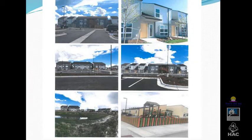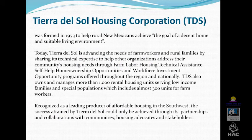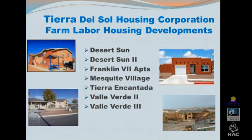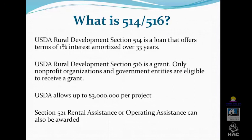Just to review: Section 514 is a loan that can offer up to 33 years amortization at 1% interest rate, so it's a very affordable form of financing. Section 516 is a grant that can only be provided to nonprofit organizations and government entities. Typically, when USDA provides the notice of funding, they offer up to $3 million as a mix of these funds for each project. You can also apply for Section 521 rental assistance or operating assistance, which is extremely rare these days. This map shows which technical assistance providers are overseeing each area, but whoever you call, we will see that you are put in touch with the correct technical assistance provider.